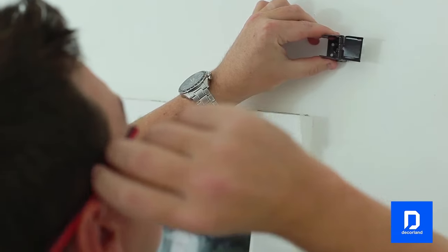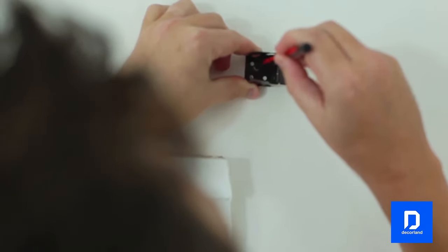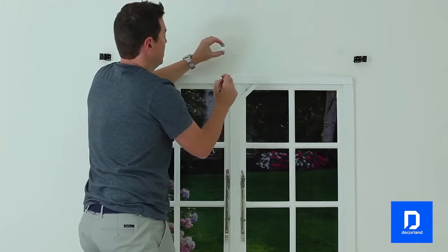Hold the brackets in the correct position over the pencil marks and make small marks on the wall where the bracket holes are.